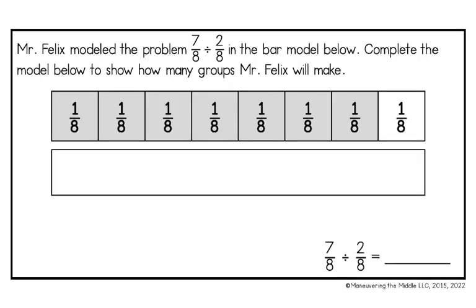Mr. Felix modeled the problem 7 eighths divided by 2 eighths in the bar model below. Complete the model below to show how many groups Mr. Felix will make. The first one has already been done for us — it has 8 pieces and 7 are shaded in. So now we need to complete the second one by dividing it into 8 sections, since our second fraction is 2 eighths.